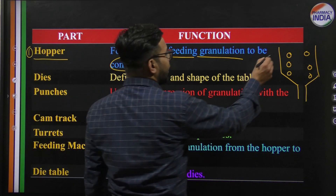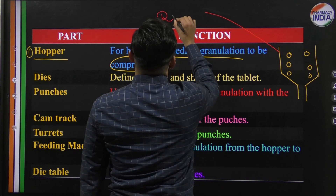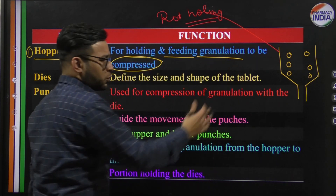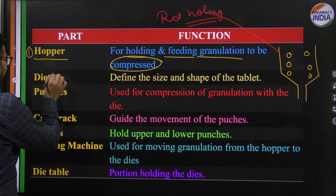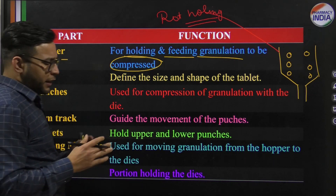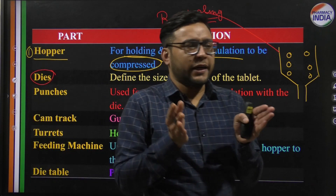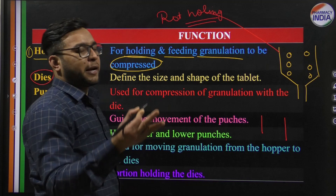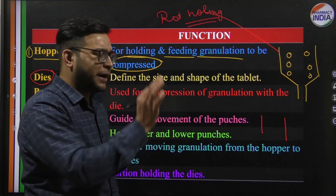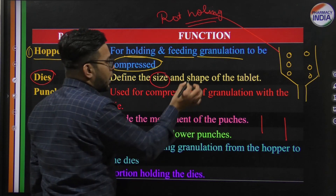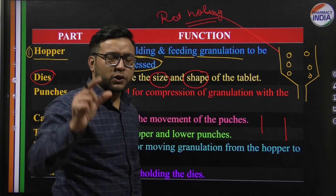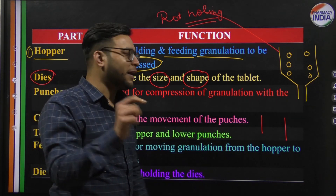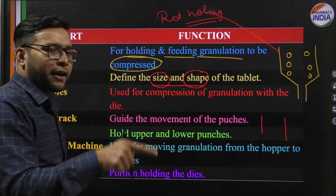The die is the main component related to the tablet machine. The die defines the size and shape of the tablet. So the die determines what size and shape the final tablet will be.